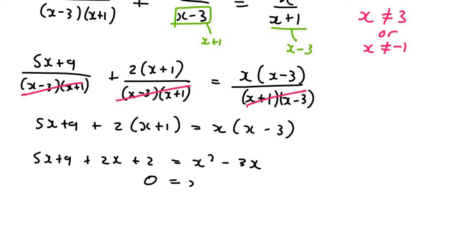I'm then going to take everything to the right. So it's going to become minus 5x minus 9 minus 2x minus 2. And now we can simplify. It's going to give us minus 10x and then minus 11. This can be factorized.